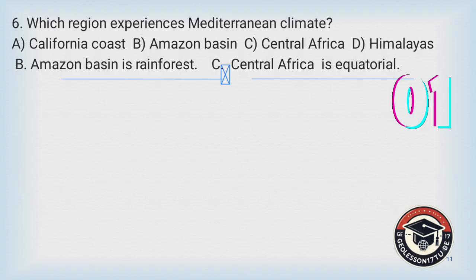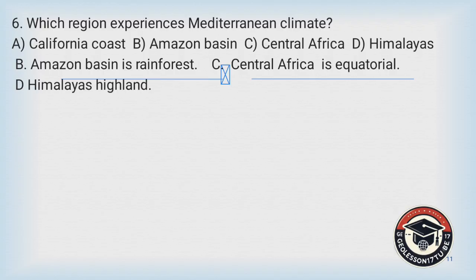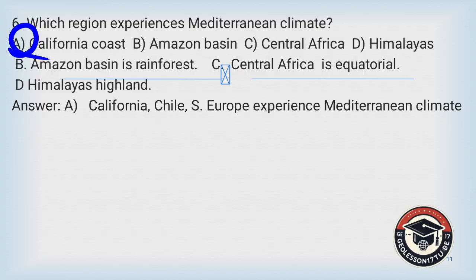Amazon basin is a rainforest climate region and Central Africa is equatorial. The Himalayas are a highland climate type. Countries like California, Chile, and South Europe are categorized under Mediterranean climates. So the correct answer is A, California coast.